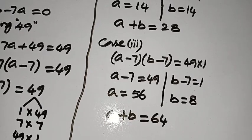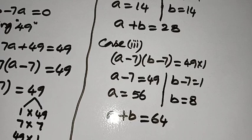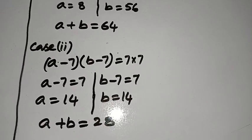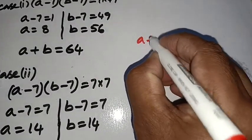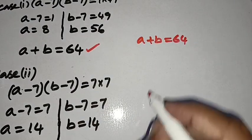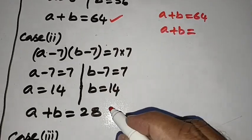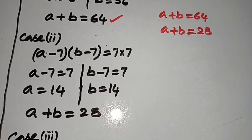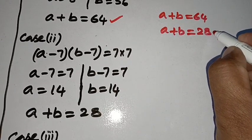So two different values we got for A plus B. The two different values are A plus B equals 64 and A plus B equals 28.